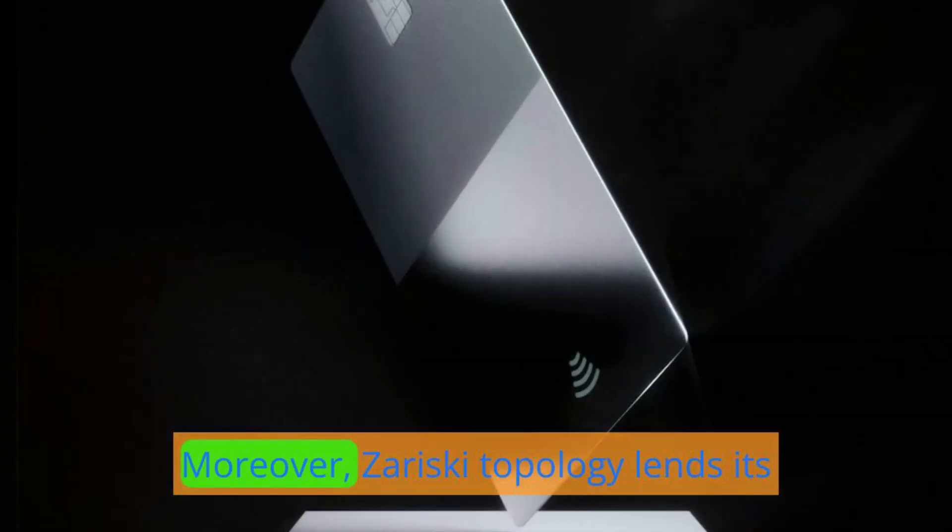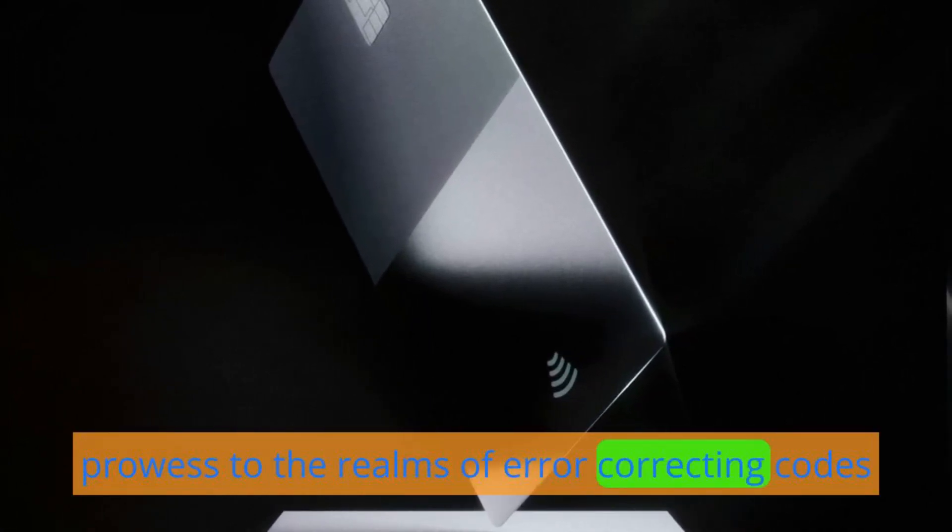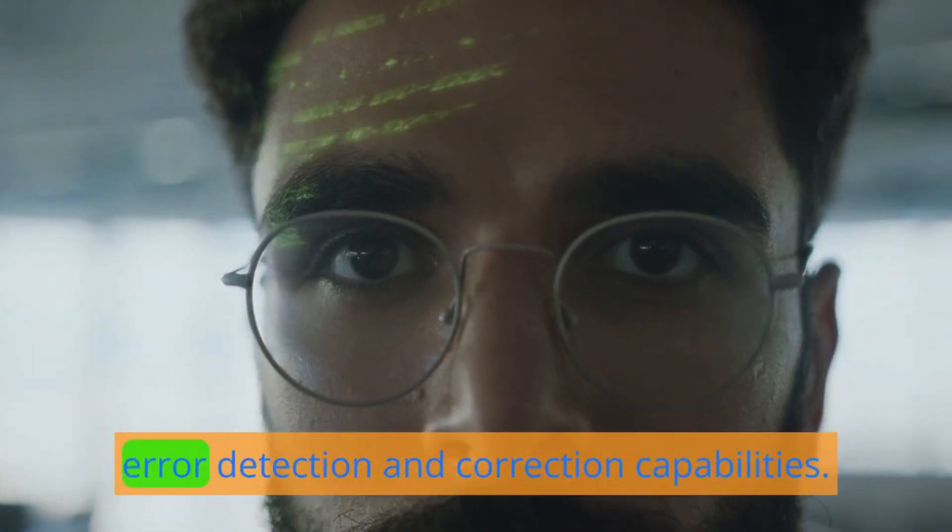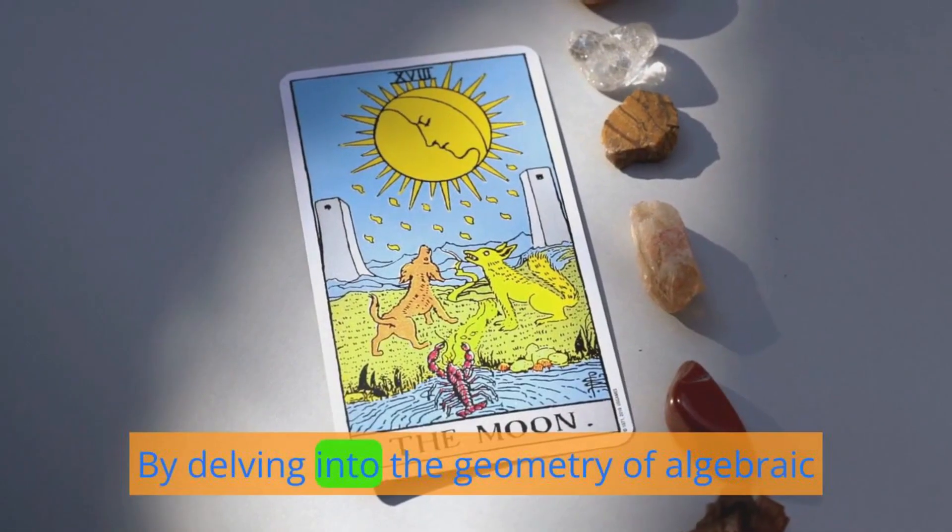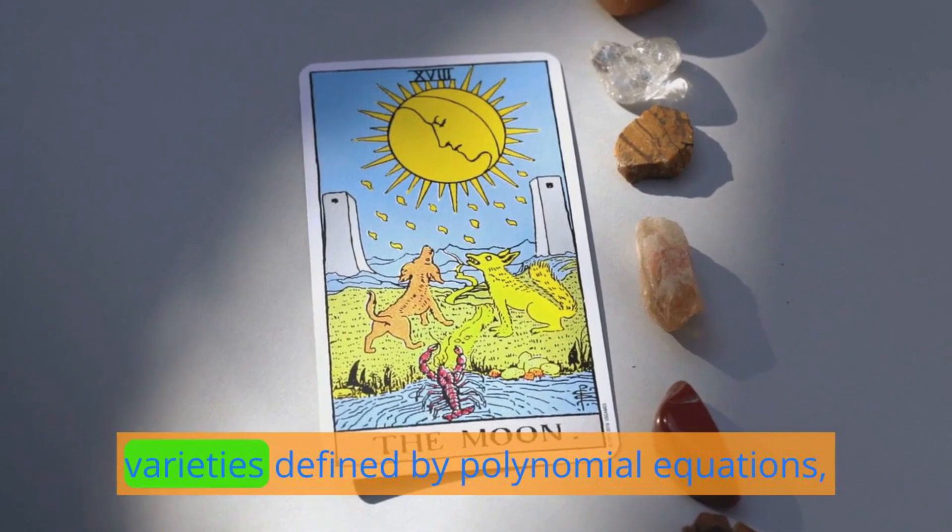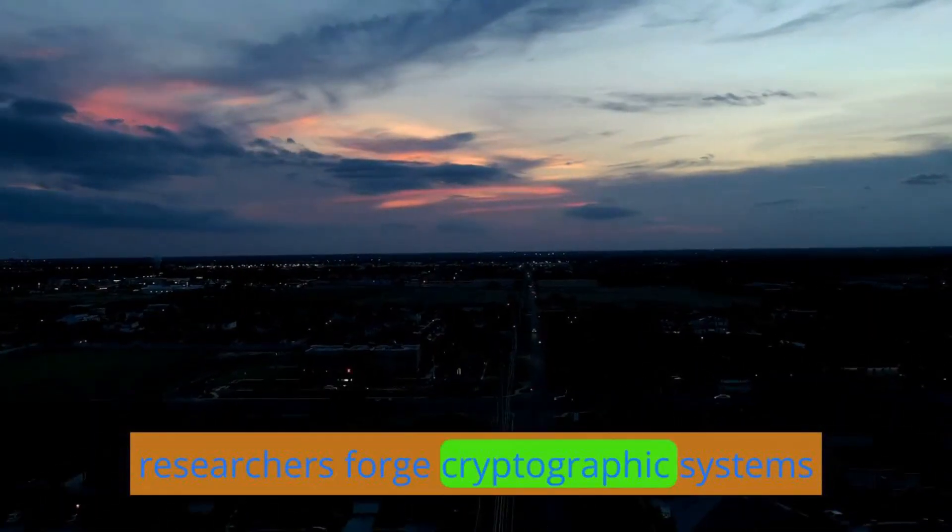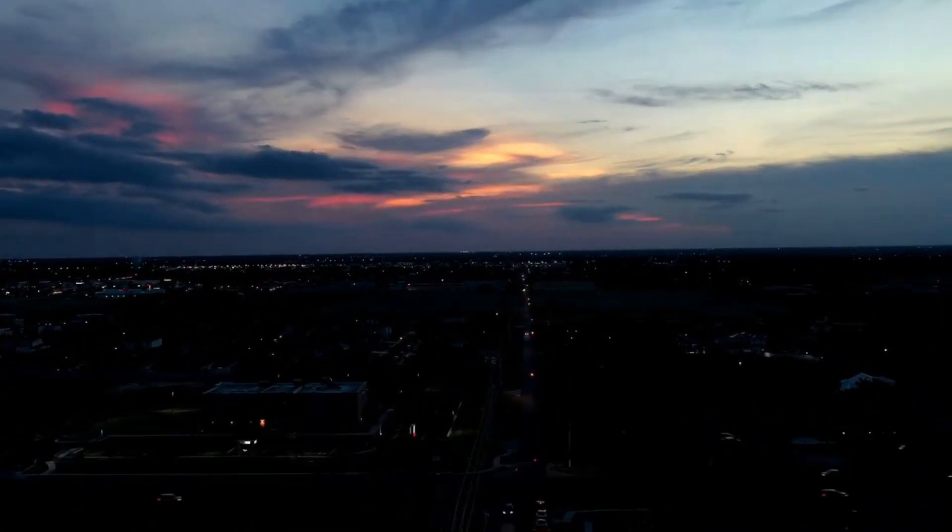Moreover, Zariski topology lends its prowess to the realms of error-correcting codes and cryptography, where its geometric insights guide the construction of codes endowed with robust error detection and correction capabilities. By delving into the geometry of algebraic varieties defined by polynomial equations, researchers forge cryptographic systems fortified by the principles of algebraic geometry.